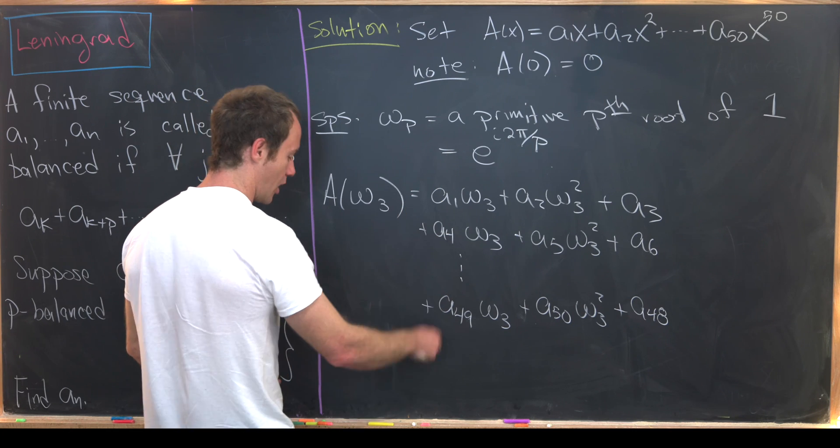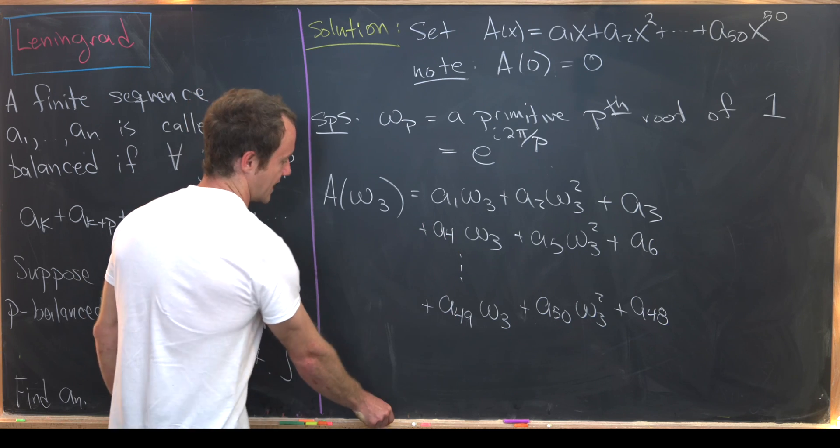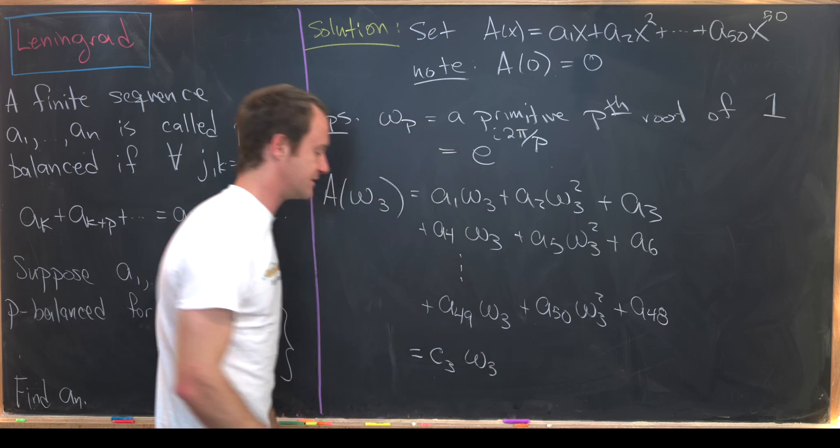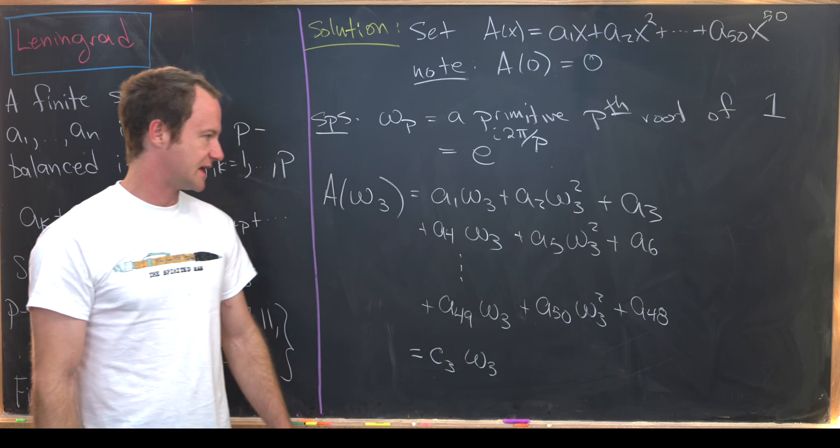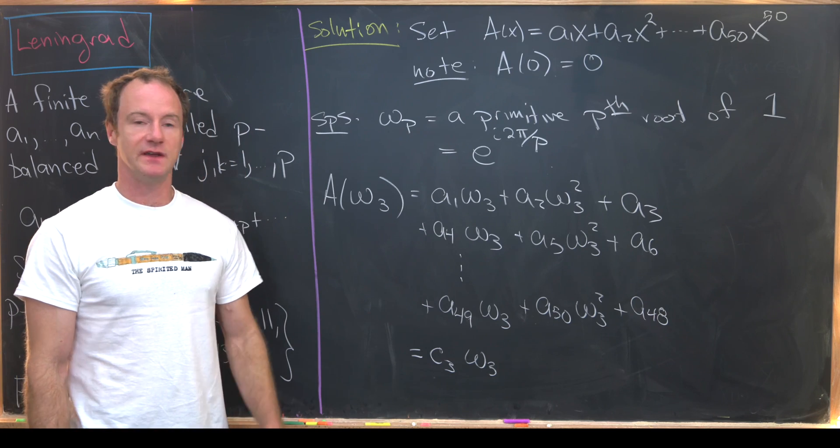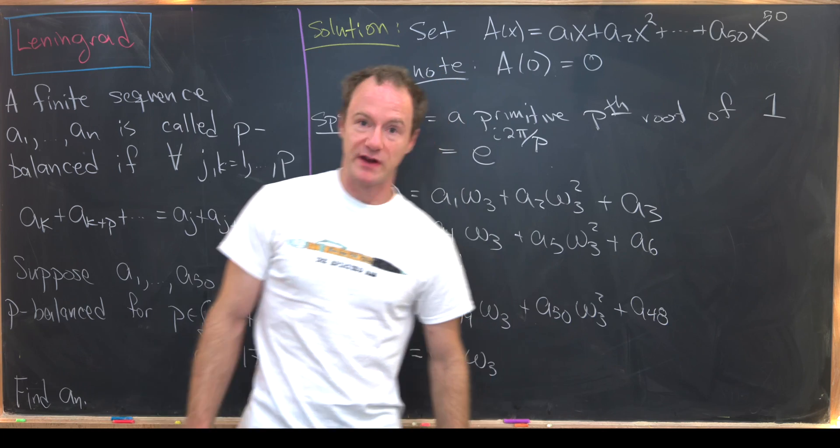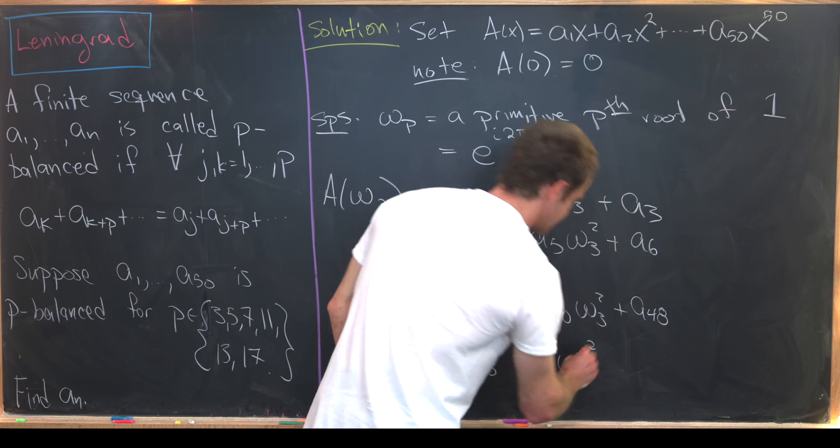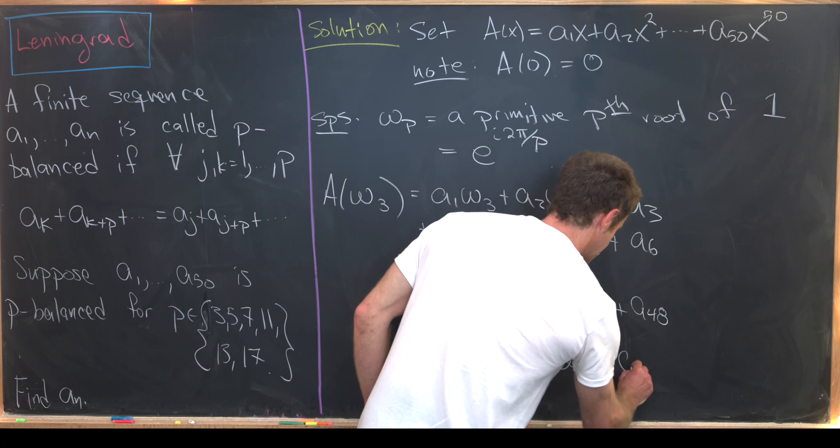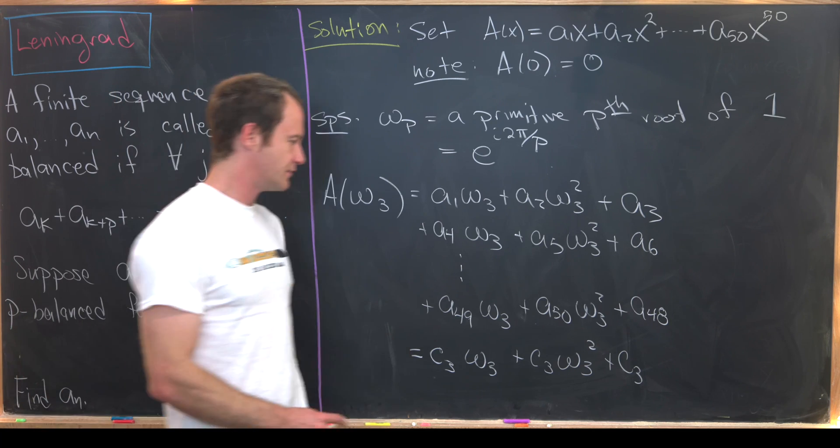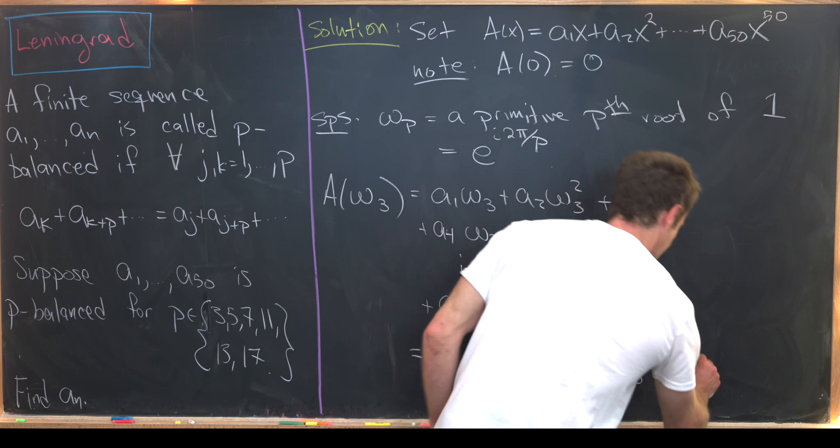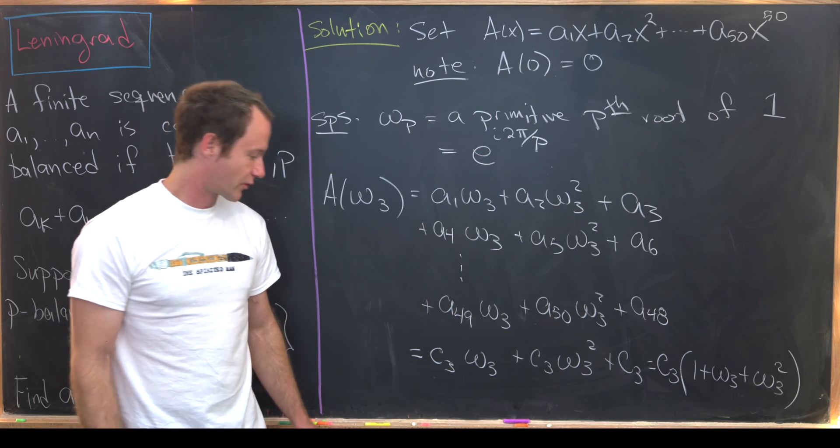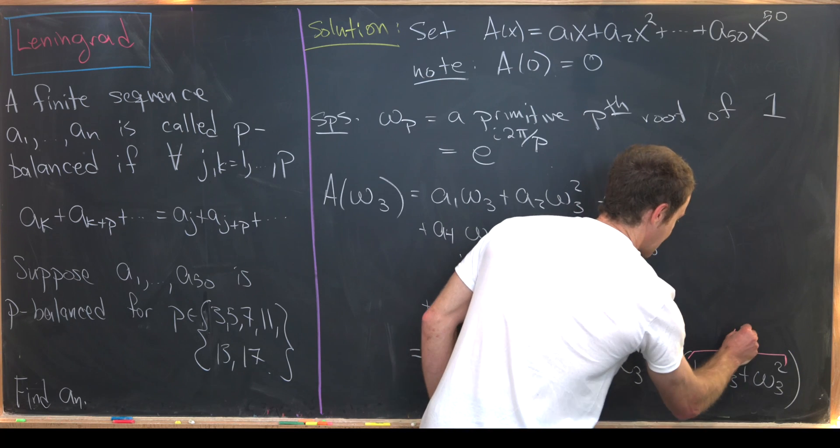But notice that we can combine all of these together. So a1 plus a4 all the way up to a49, we can put all those together. I'm going to put it together into the number c3. So we have c3 times omega_3. Then likewise, a2 plus a5 all the way up to a50. But since our sequence is three-balanced this sum is the same as this sum. So this is plus c3 times omega_3 squared. And then finally we have that added to c3. We can factor a c3 out and we're left with 1 plus omega_3 plus omega_3 squared. But since omega_3 is a primitive third root of unity we know that this is exactly equal to 0.